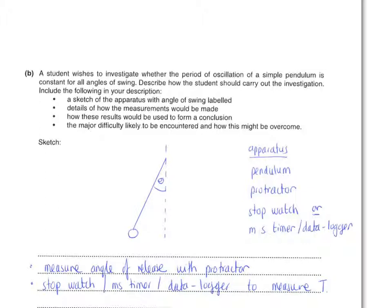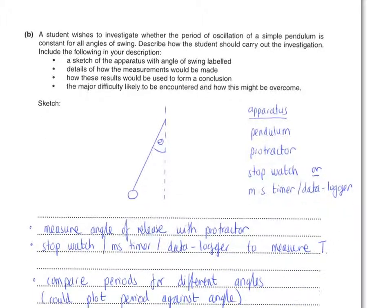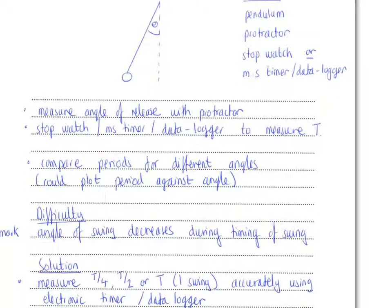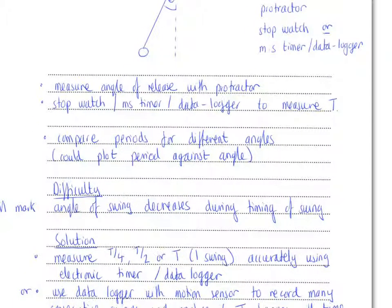Now often in an experiment of this type, you would be expected to comment on the need to draw a graph. And that is a possible answer here. You could plot a graph of period against angle. We're not really expecting the time period to change with angle. And it would be possible to identify that from a table of results. So in this particular question, the mark was awarded for just comparing the time periods for different angles of release.